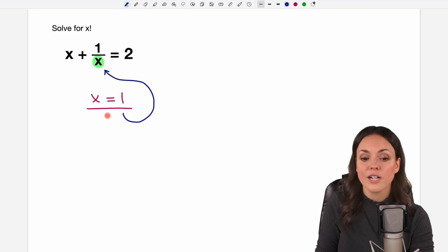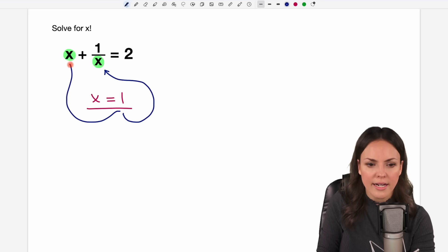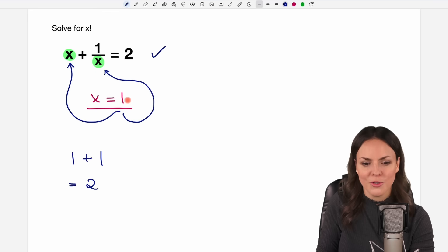But yeah and if you're not sure about your results you can also just see if the equation is valid. So you put your 1 into every x you have in here. So we have 1 plus 1 over for this x we put the 1 in here and then we see what we have here 1 over 1 equals 1. We have 1 plus 1 which equals 2 and this is what we get on the right side. So our solution is valid and we know we did everything right.